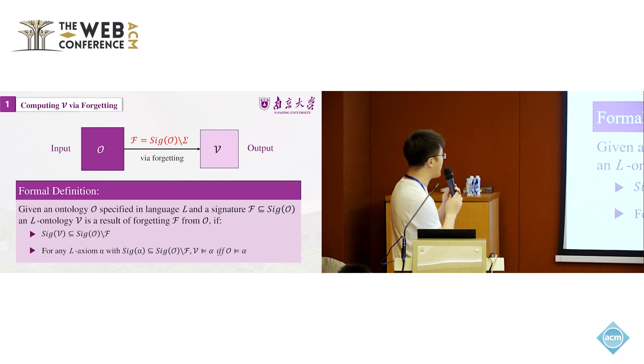This is a formal definition. Given an ontology O, specified in a description logic or logical language L, and a signature F, which is a subset of the original ontology signature. A new L ontology V is a result of forgetting F from O, if these two conditions are satisfied. First, the new ontology must be a subset of the original one.